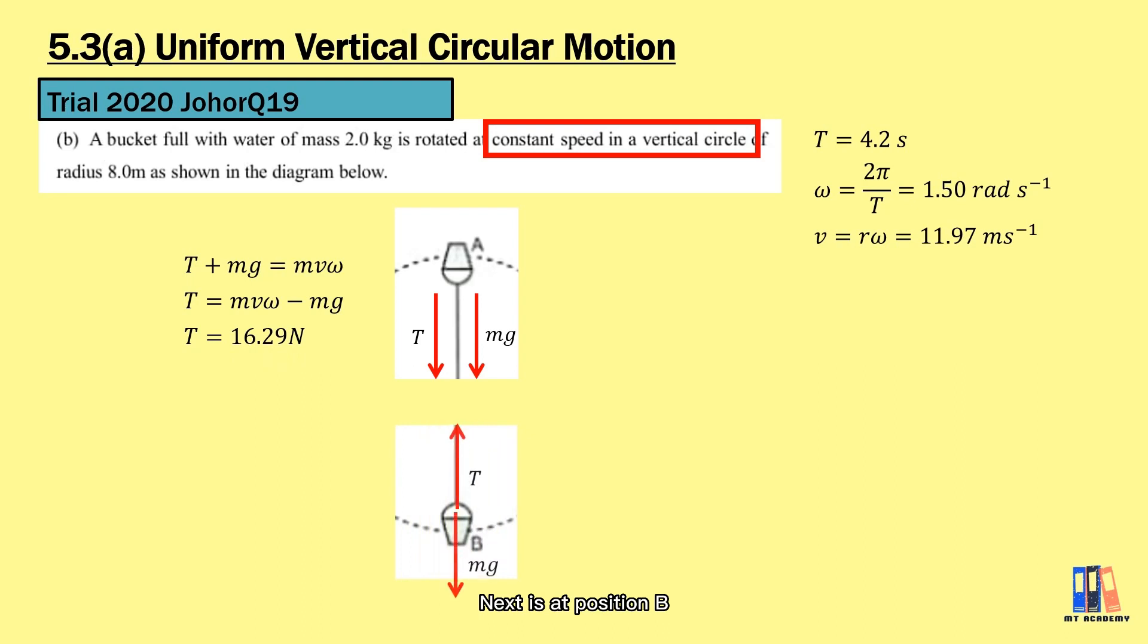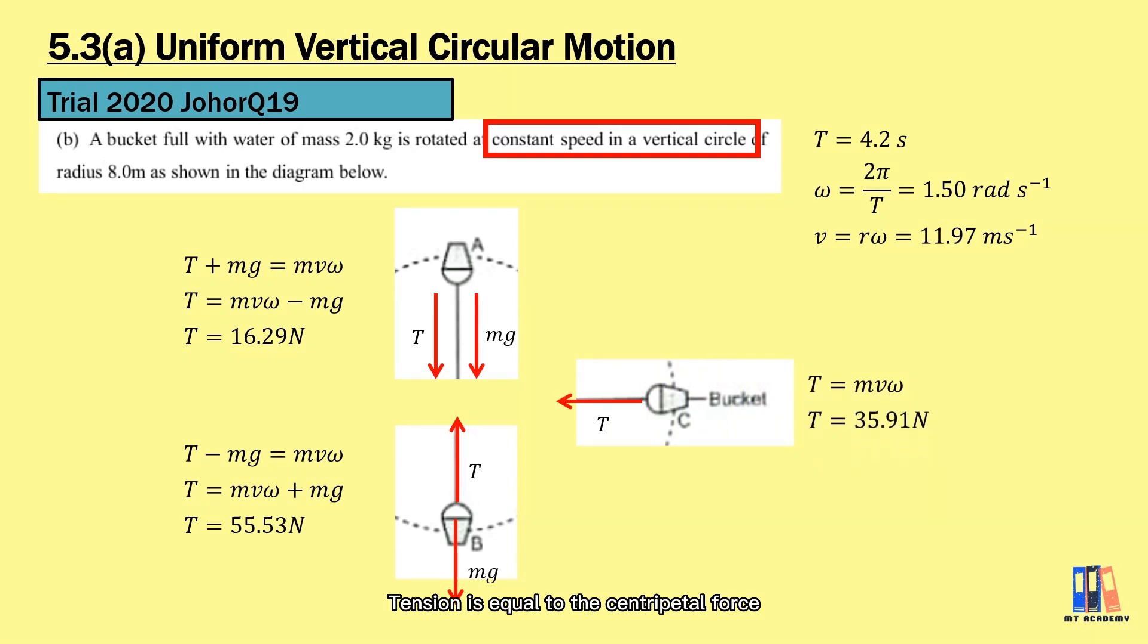Next is at position B, the tension is in outward direction while the weight is in downward direction. So we have t minus mg is the centripetal force. Solving this would give us the tension is 55.53 N. Lastly is position C, tension equals the centripetal force and it is 35.91 N.